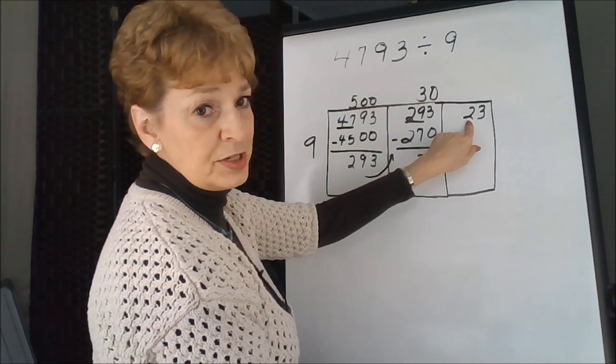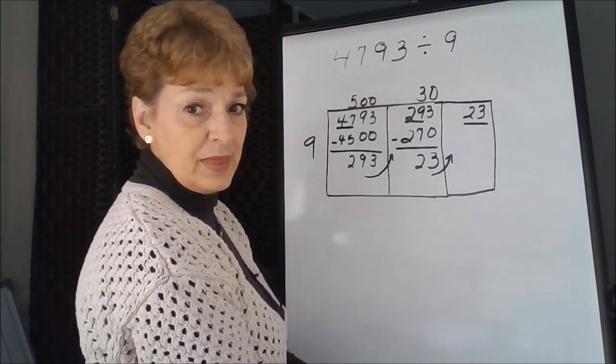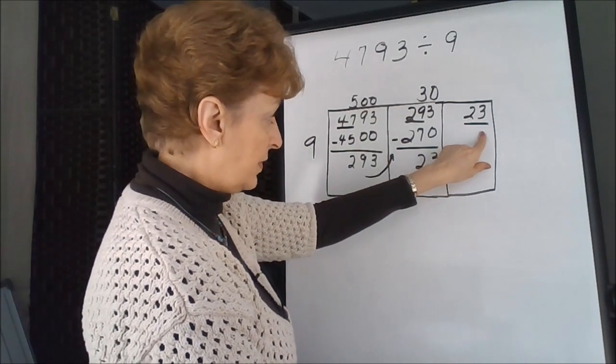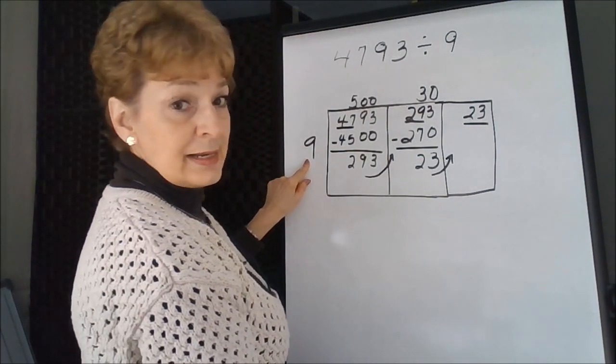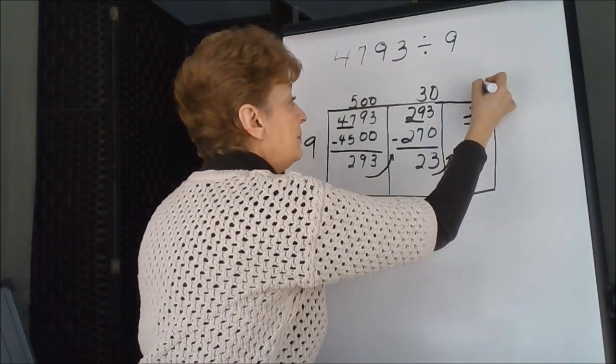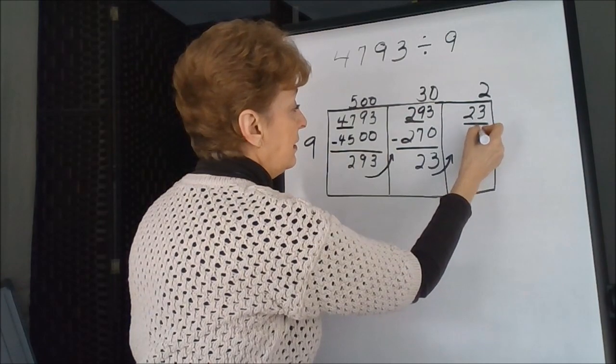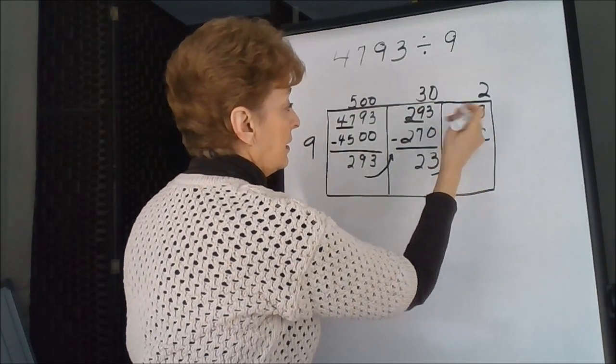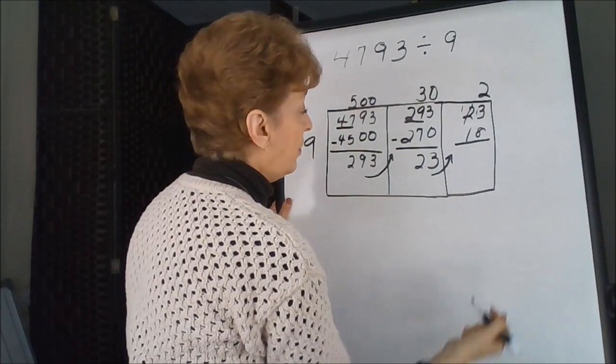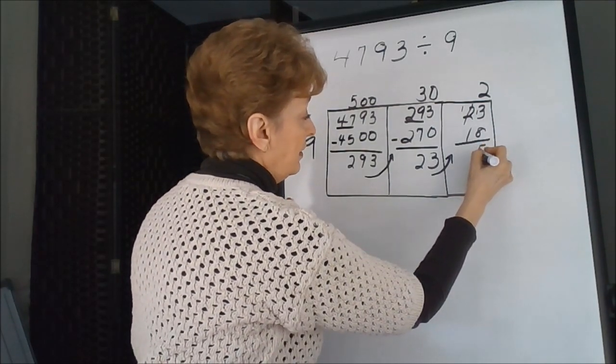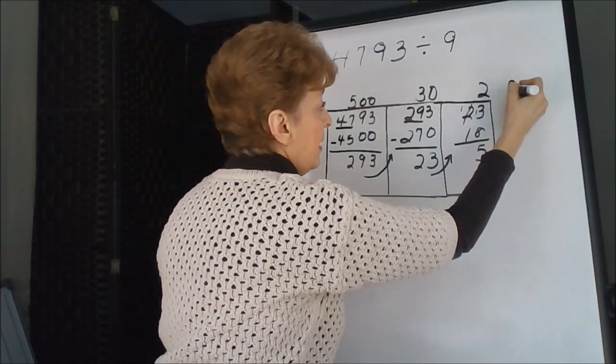9 will not go into 2. We have to think of some number that is close to 23 now. 9 times 2 is 18. 2 times 9 is 18. Let's subtract. 13 take away 8 is 5. 5 is smaller than 9, so that's our remainder.